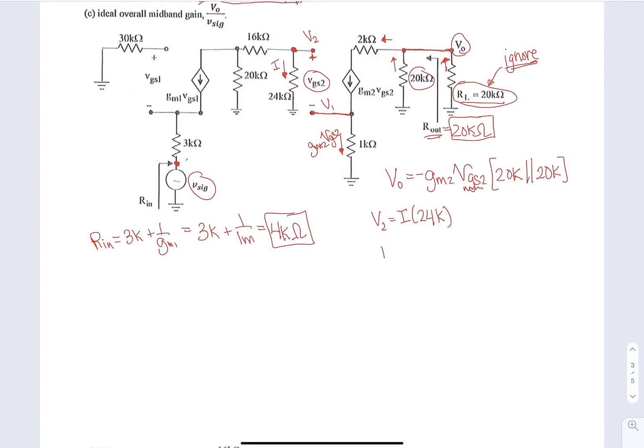And I can be found from a current divider. So GM1 VGS1 times 20K, or it would be times one over 40K, and then divided by one over 40K plus one over 20K, or the addition of these. So whichever form you use for the current divider.